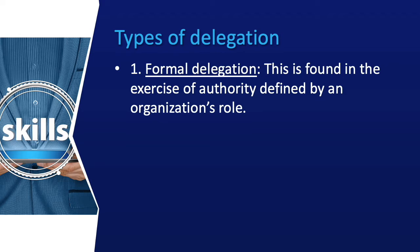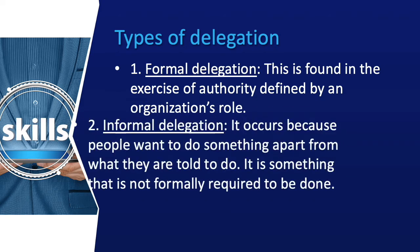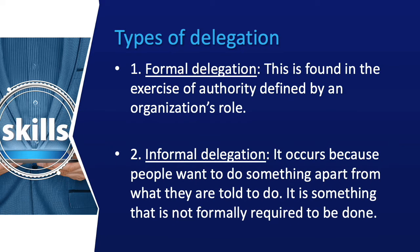Whenever a manager gives a task to a person, he gives them the authority to fulfill the task. In informal delegation, it occurs because people want to do something apart from what they are told to do. Here the manager is not giving authority to a person; the person themselves decides to act as they see it is necessary to carry out normal organizational work.